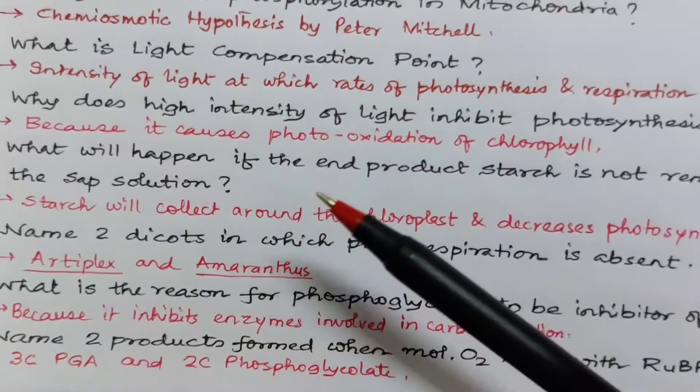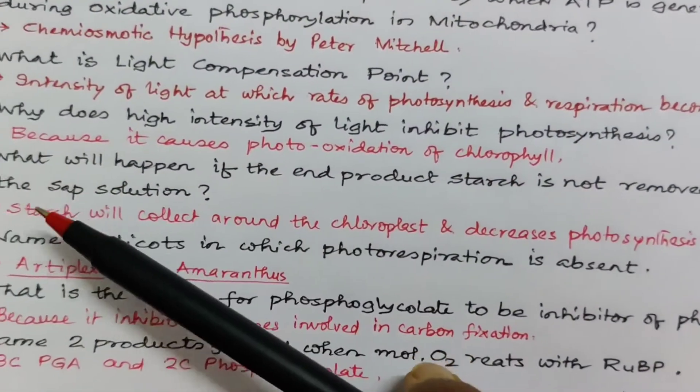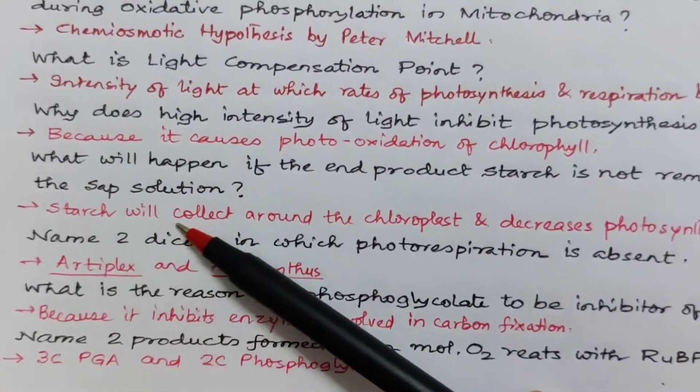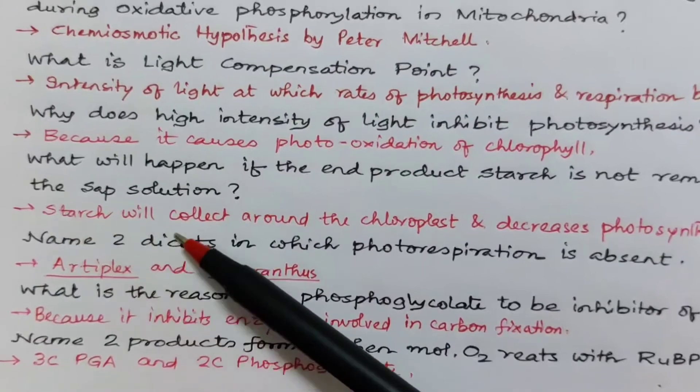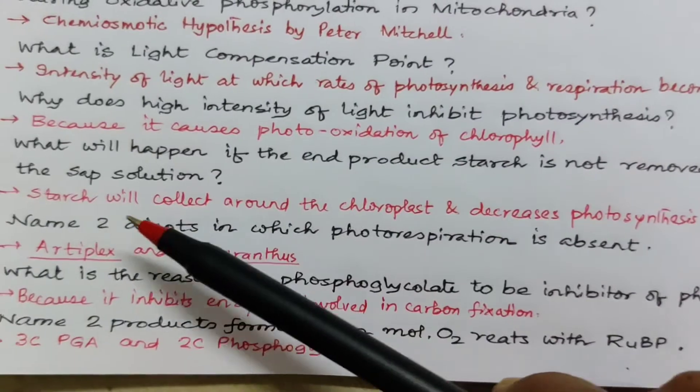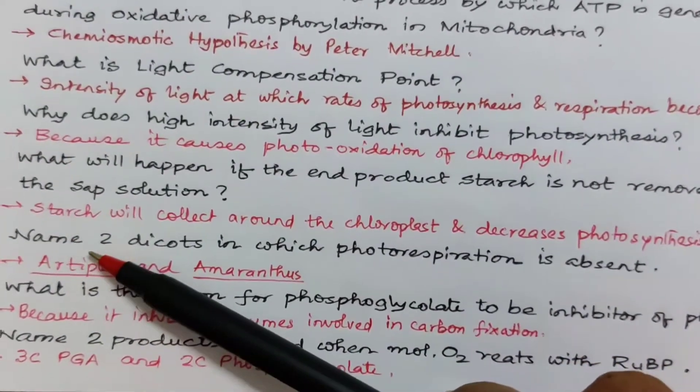What will happen if the end product starch is not removed from the sap solution? Thus starch will collect around the chloroplast and decrease photosynthesis rate. Hence photosynthesis will not occur. Ultimately it will stop.